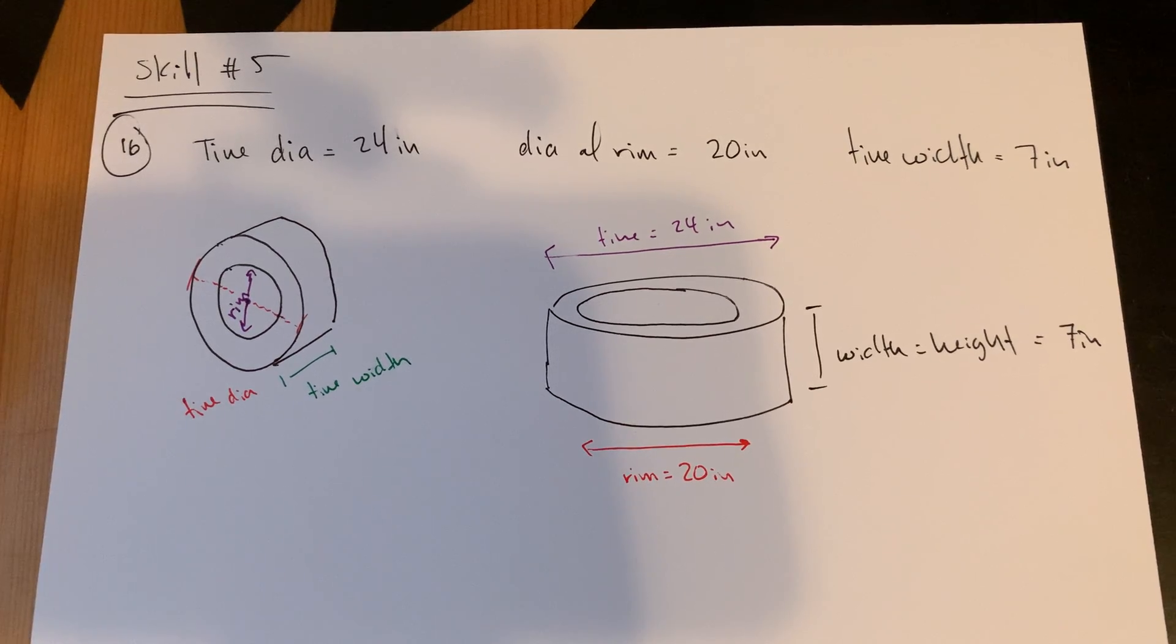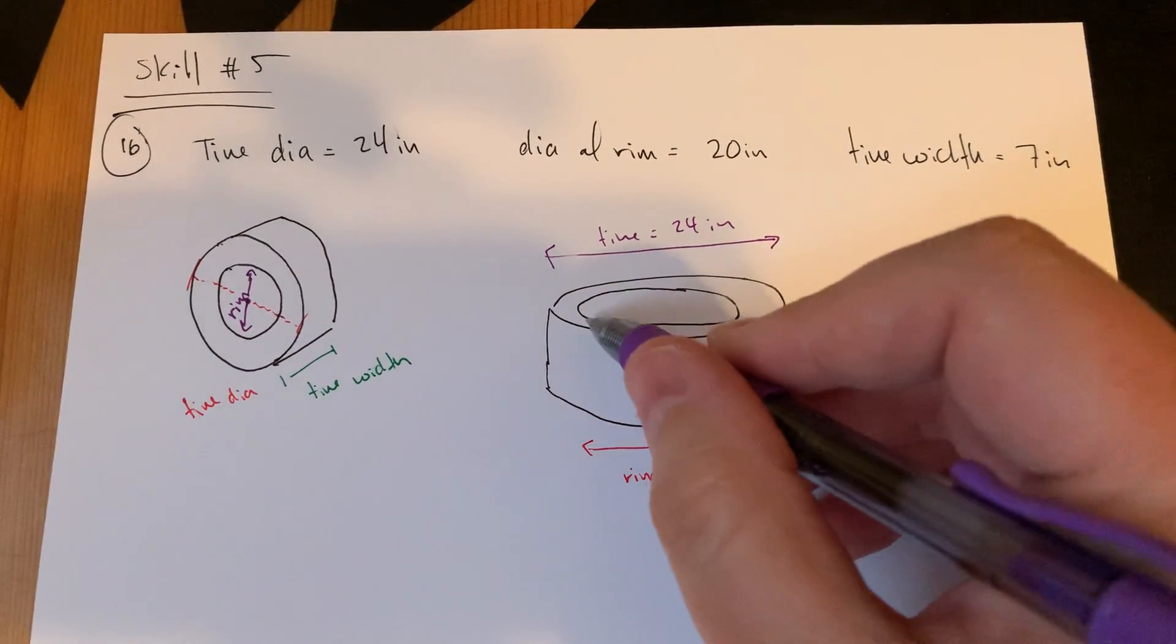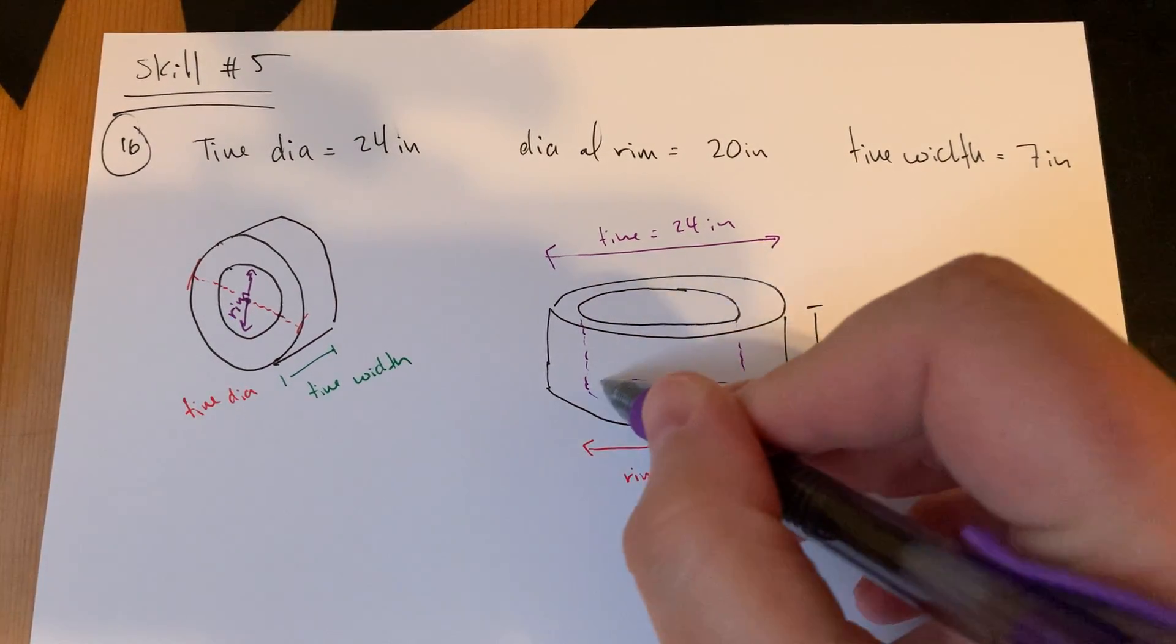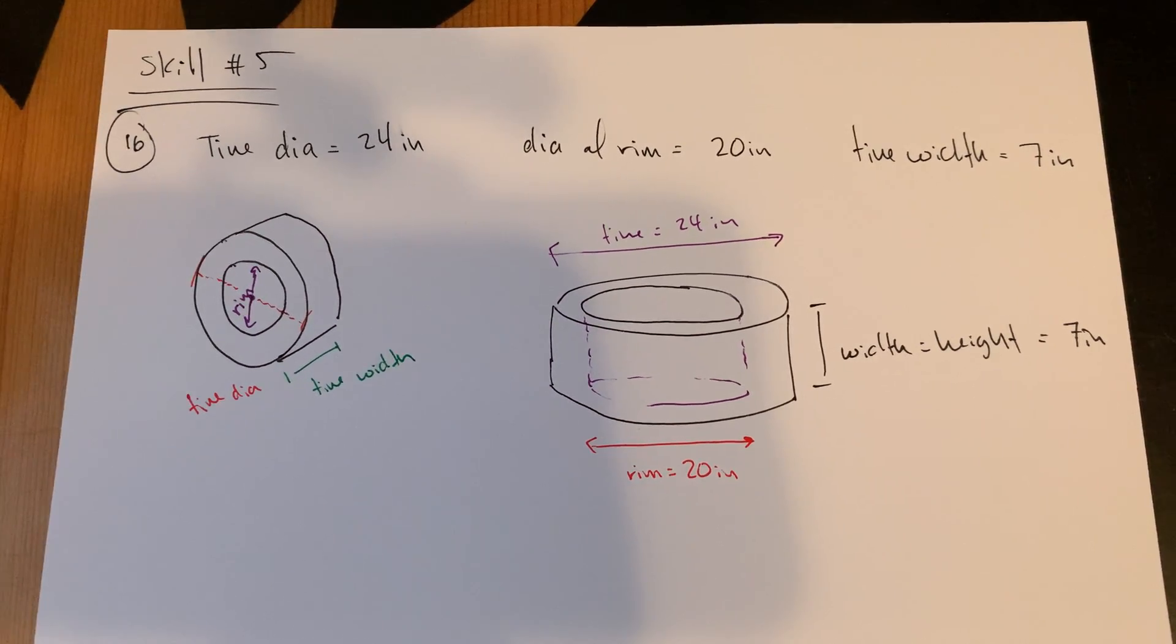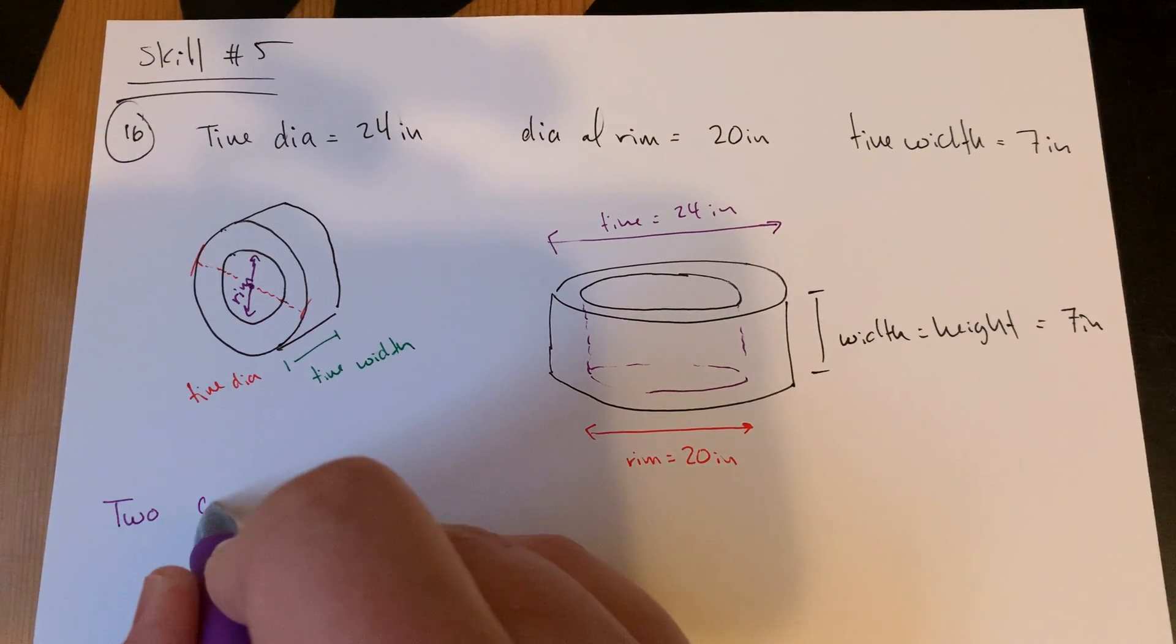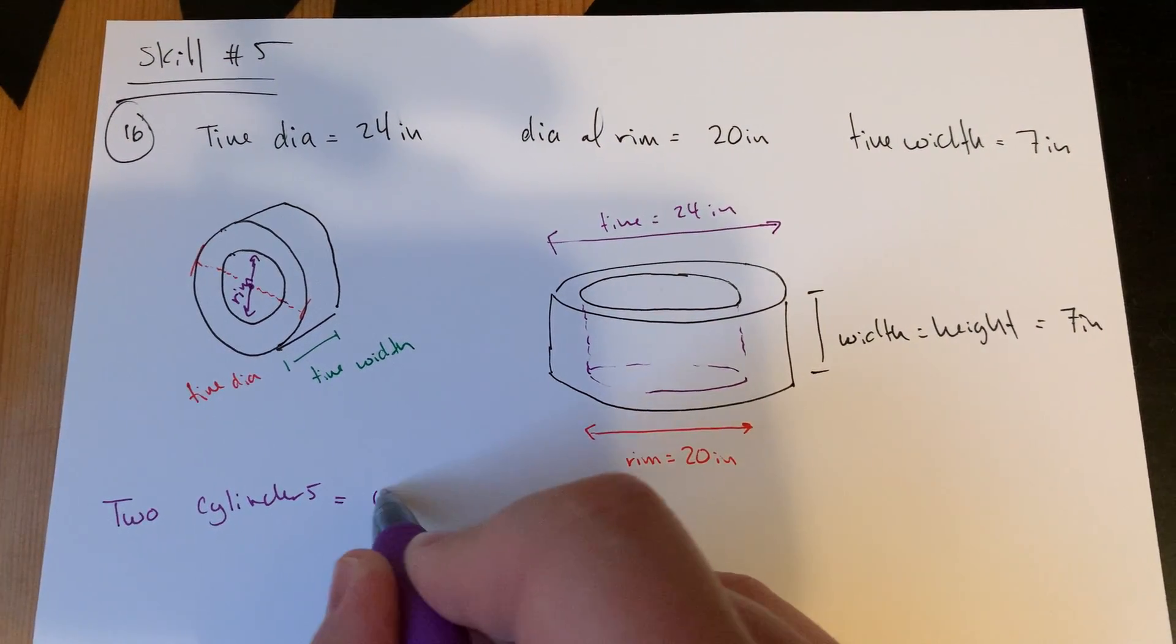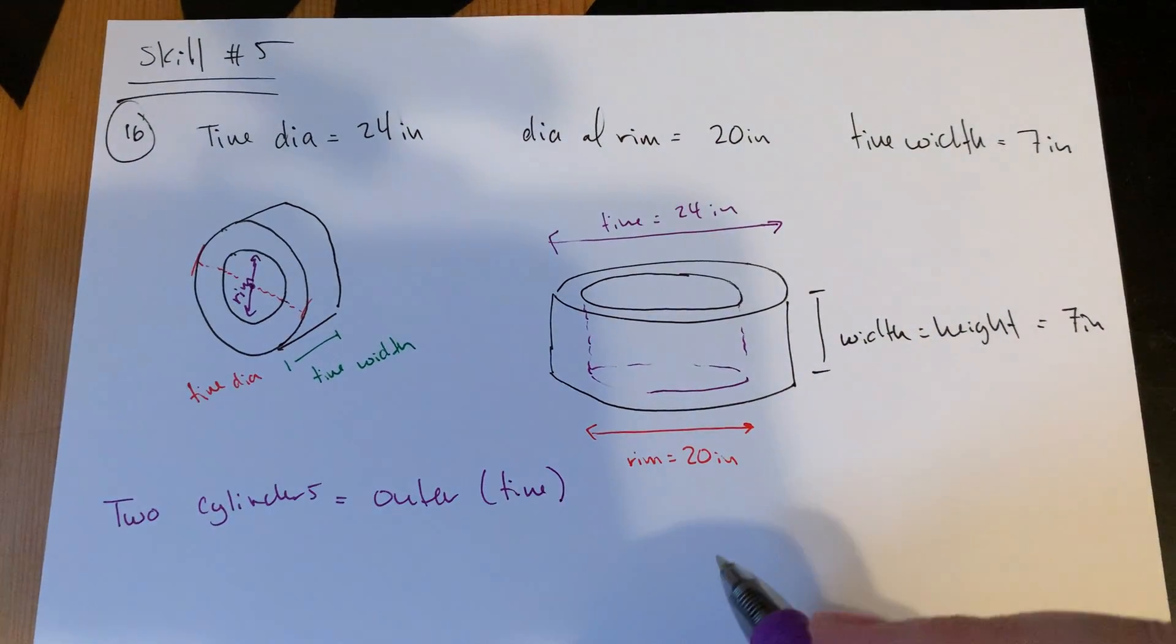And then I have the tire diameter all the way from rubber to rubber, which is 24 inches. So what I want is the volume of the air that is only out here in the end. If I think of this coming down, what I really have here is essentially an outer and an inner cylinder. This is really sort of two cylinders.